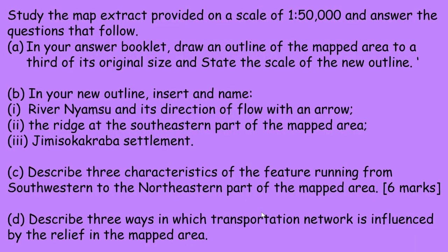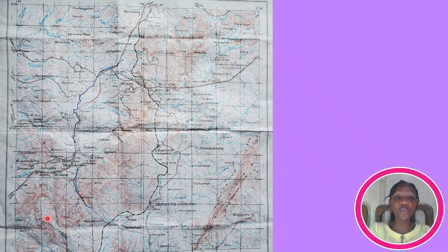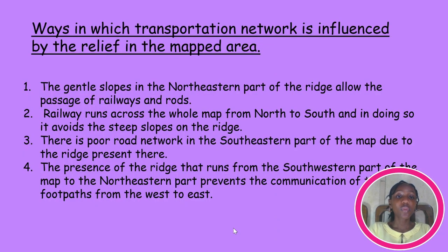Describe three ways in which the transportation network is influenced by the relief in the map area. The gentle slopes in the northeastern part of the ridge allow the passage of railways and routes. Railways run across the whole map from north to south, avoiding steep slopes on the ridge. There is a poor road network in the southeastern parts due to the ridge there. The presence of the ridge running from southwest to northeast prevents communication of footpaths from west to east.